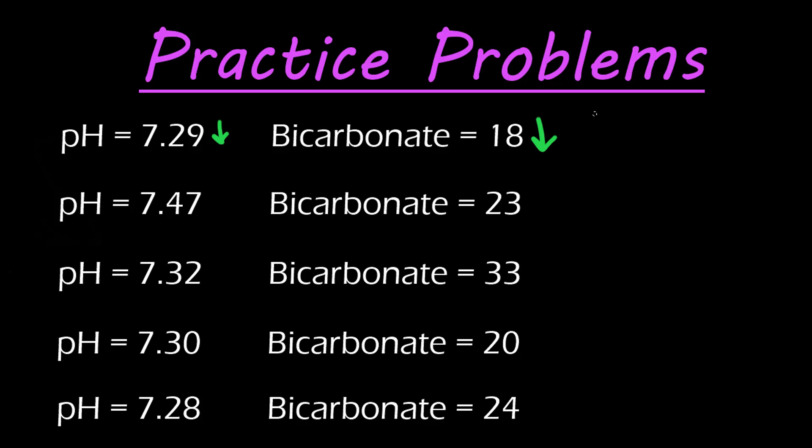Both arrows going in the same direction, this is going to be metabolic. And is it acidosis or alkalosis? Looking at our pH, it's below the value, so it's going to be acidosis. This first example is metabolic acidosis.